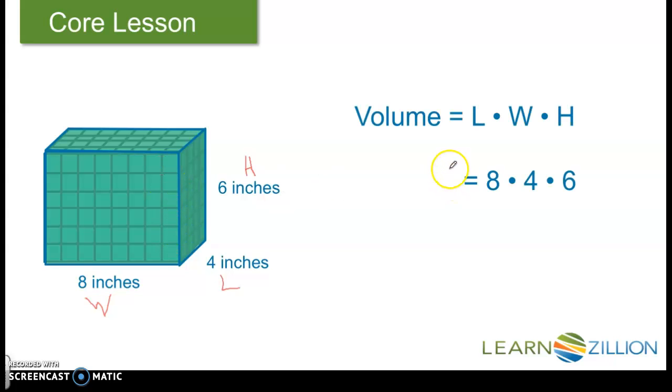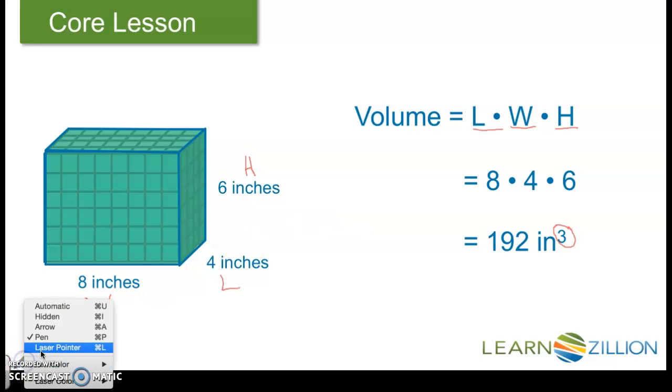Here, we're going to use our formula. 8 times 4, which is the base, which will give us 32. 32 times 6, which will give us 192 inches cubed. This little 3 right here represents the three dimensions: length times width times height. And since we were working with inches as our unit, that's why our answer is in inches.